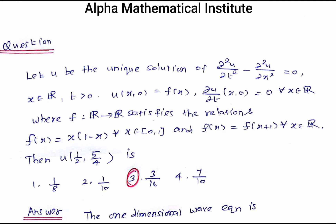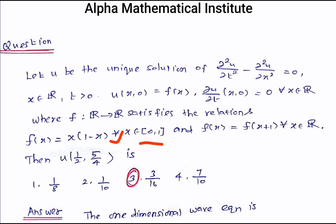Let u be the unique solution of ∂²u/∂t² − ∂²u/∂x² = 0, where x belongs to ℝ and t > 0, with the initial condition u(x, 0) = f(x) and ∂u/∂t at (x, 0) = 0 for all x in ℝ, where f: ℝ → ℝ satisfies f(x) = x(1 − x) for all x in [0,1] and f(x) = f(x + 1) for all x in ℝ — meaning f is periodic with period 1. We have to calculate u(1/2, 5/4). The options are: 1/8, 1/10, 3/16, or 7/10.